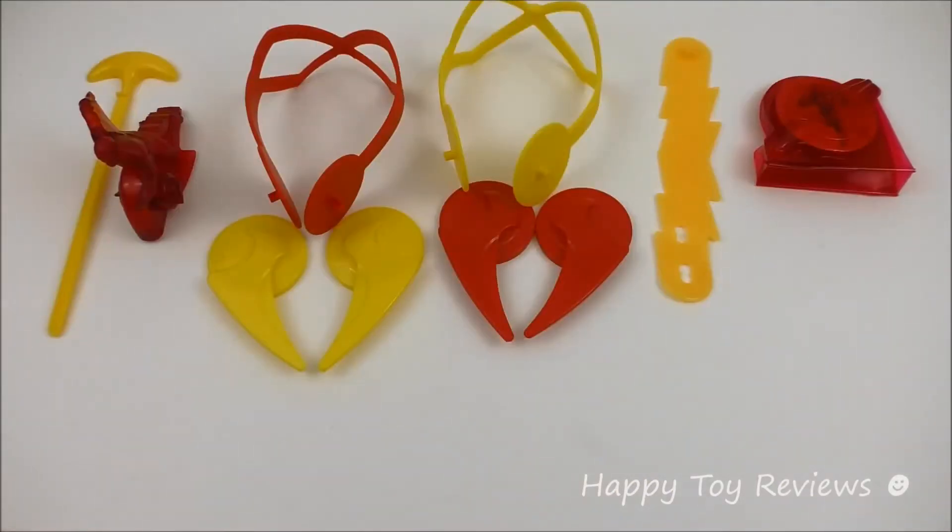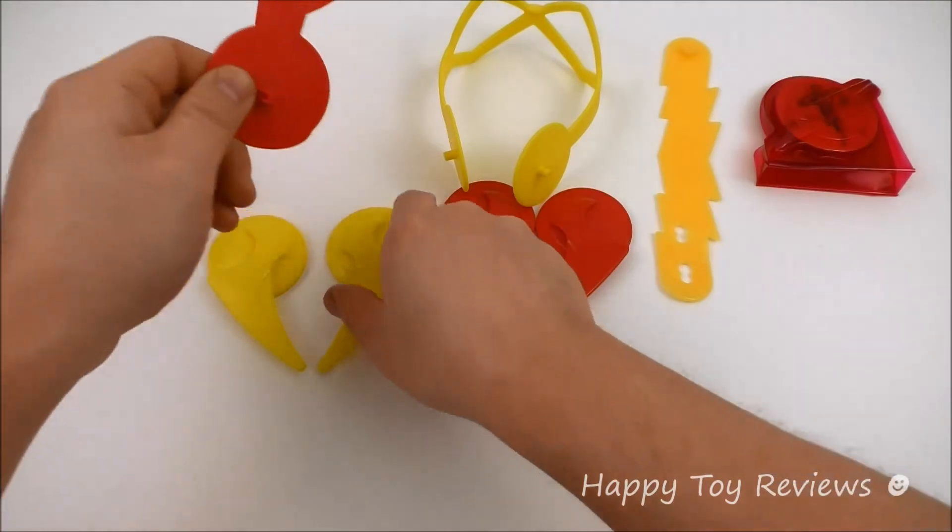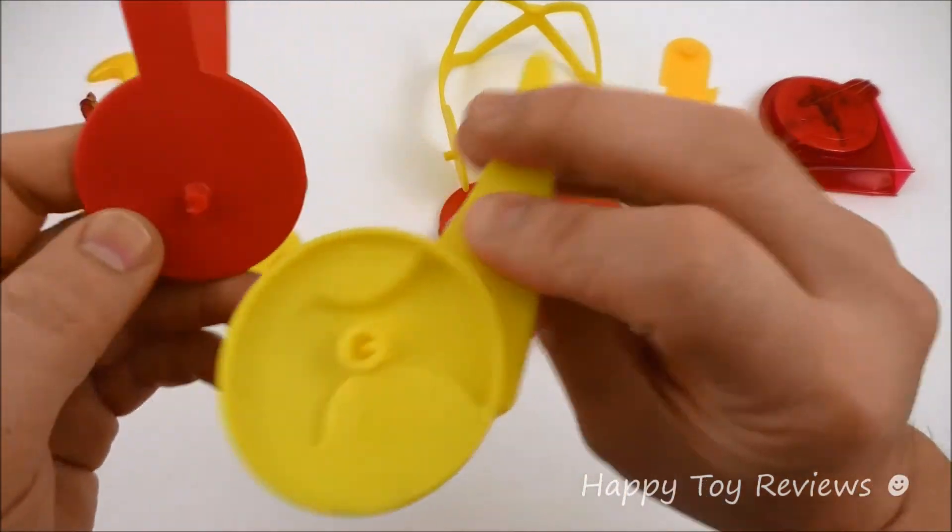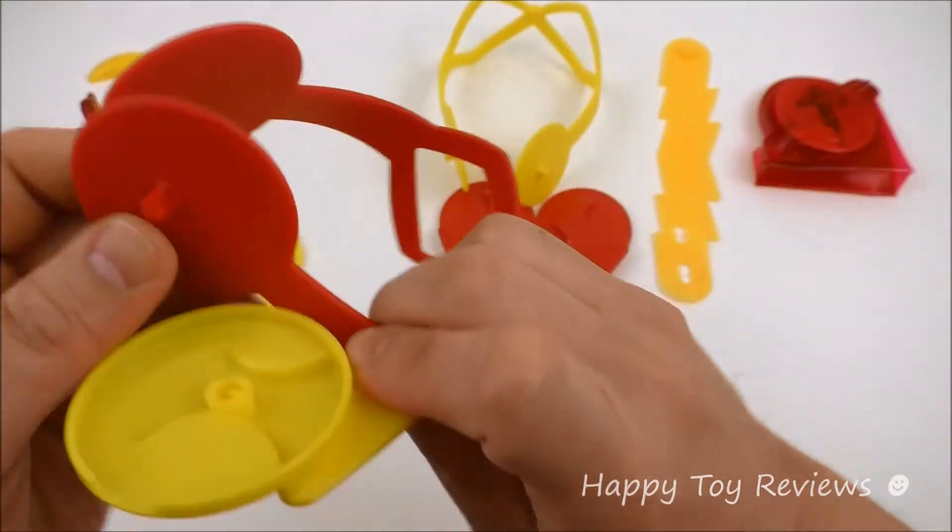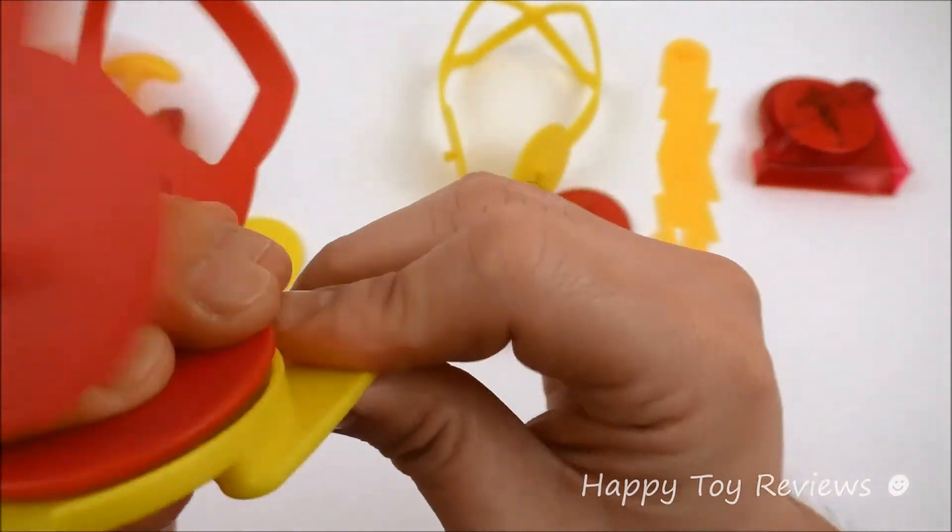Toy number two is the Flash Mask. So here's the Flash Mask. What you can do is you can apply these on like this. So you see how this goes in like this right here,